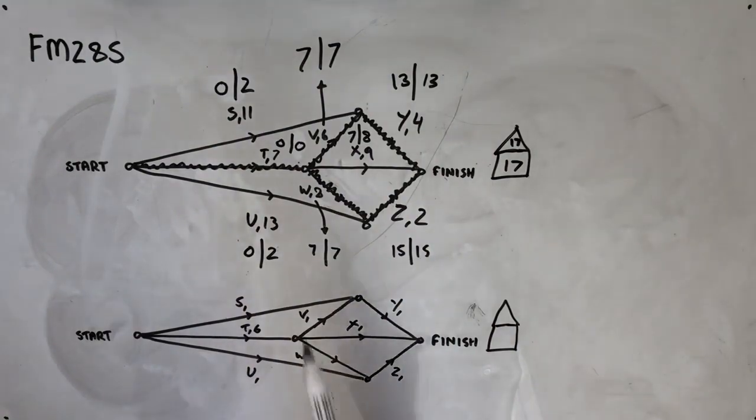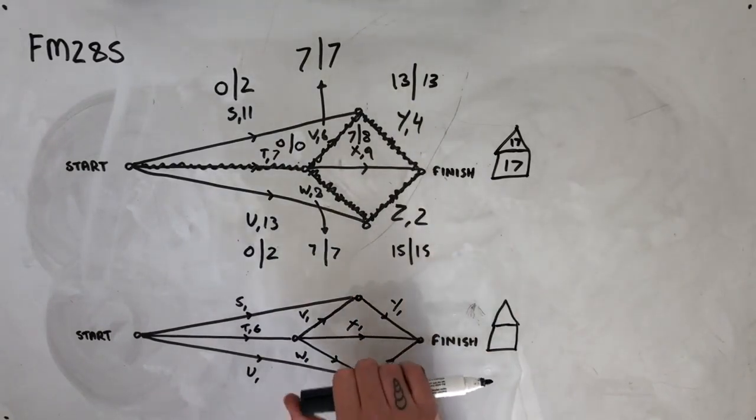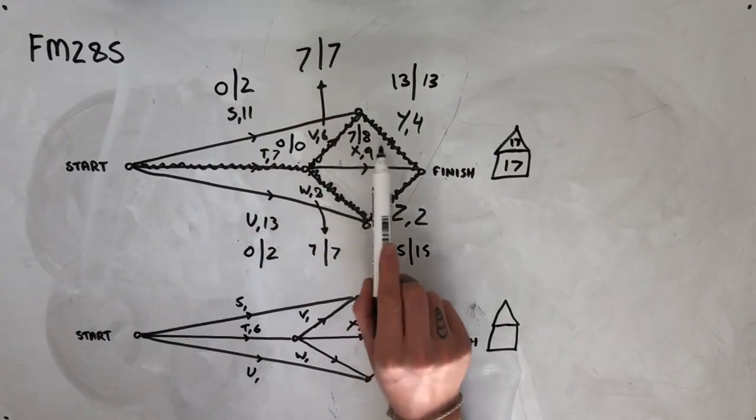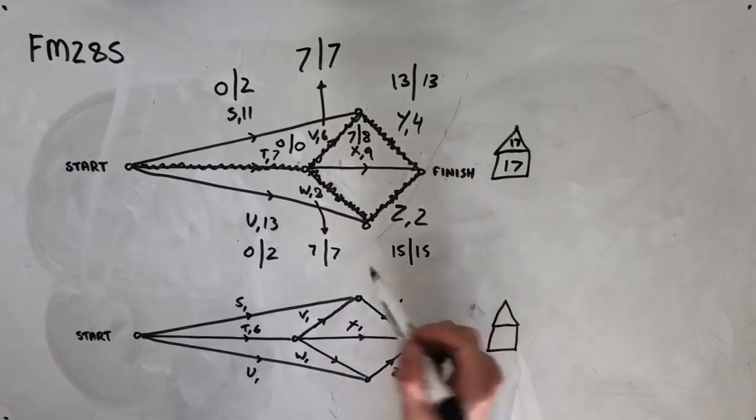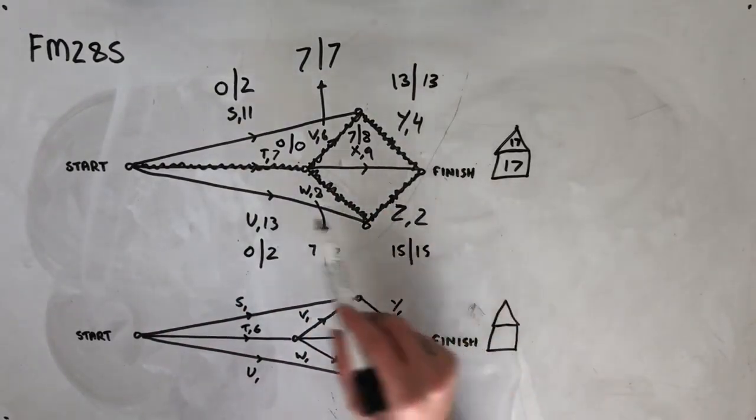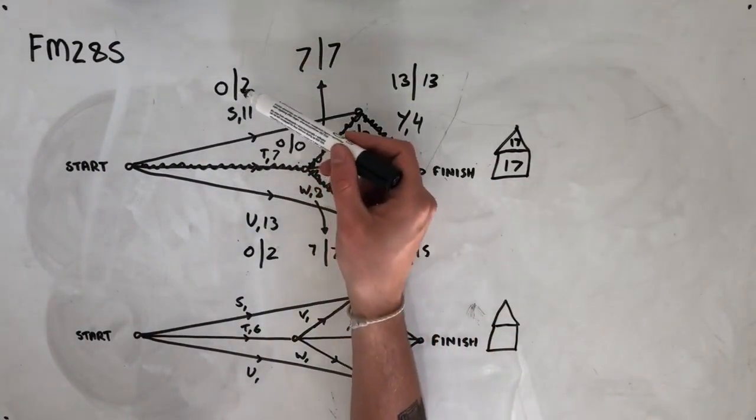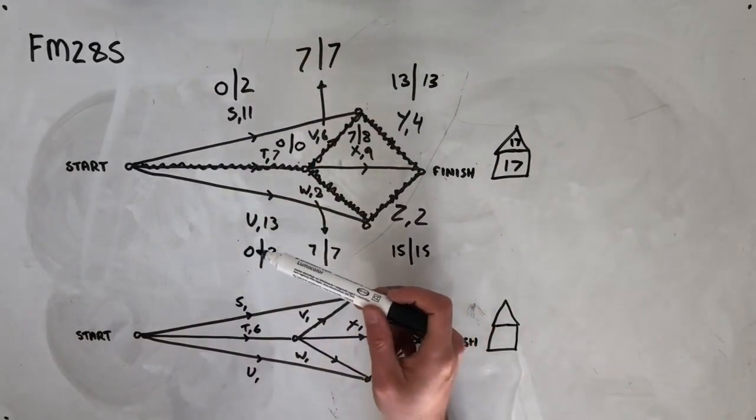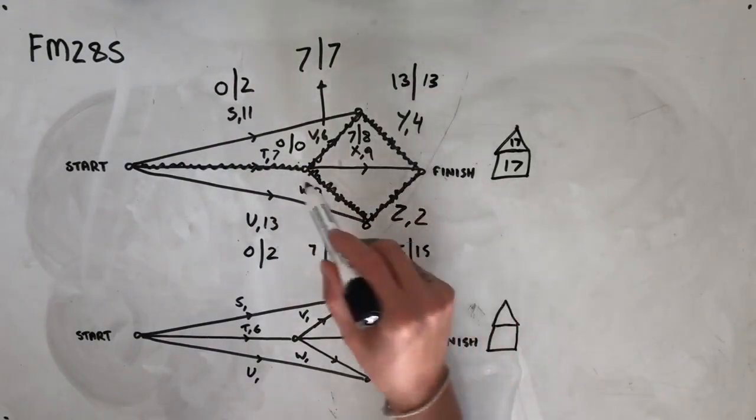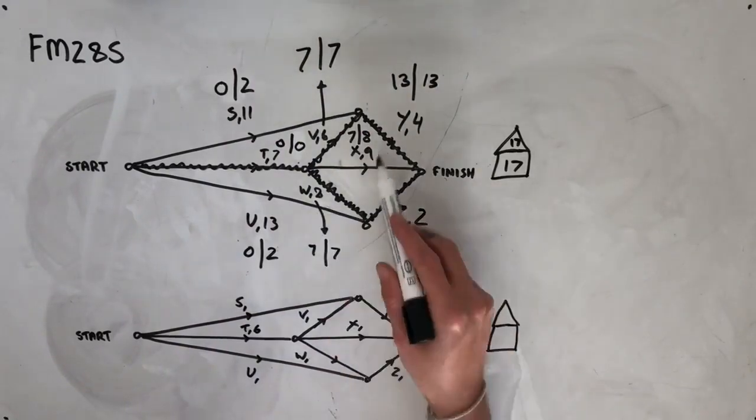And this is because anything that comes after T, its float time won't be increased or decreased. So for example, here, X, which has a float time of one will keep that float time of one day, because T comes before it, and we're reducing that. So our overall completion time, having reduced T by one day, should be 16 days. And we'll have one day of float time on S and one day of float time on U, because they're not affected by T being reduced by one day. But everything else that comes after T is going to keep its float time and keep its original times as well.